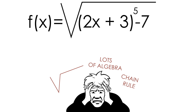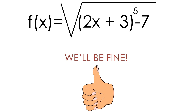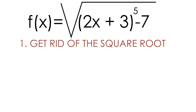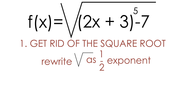Also, we're going to have to use the chain rule two times to take the derivative, which you'll see later on. But the idea for using the chain rule is exactly the same as any other function. The first thing I like to do when taking the derivative of a square root is get rid of the square root, and this can be done very easily by rewriting it with a one-half exponent. It's exactly the same.